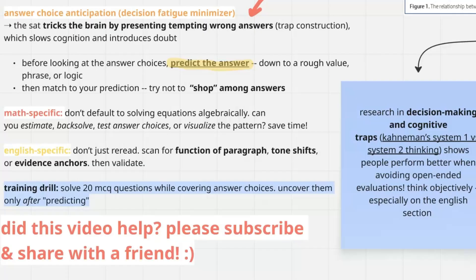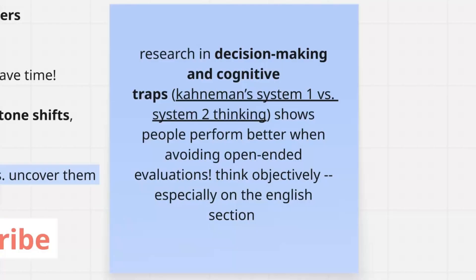Something you can also do is take out a bunch of multiple-choice questions, cover up the answer choices, and don't look at them until you've come up with your prediction answer — it doesn't even have to be the real answer. Last thing for the English section: think objectively. There's research on systems of thinking — system one versus system two. If you're being rational and objective, it clears emotion that might come from open-ended evaluations. While open-endedness and creativity might be good elsewhere, on the SAT it's crucial that you don't dabble in that nature, simply to avoid getting yourself more confused.